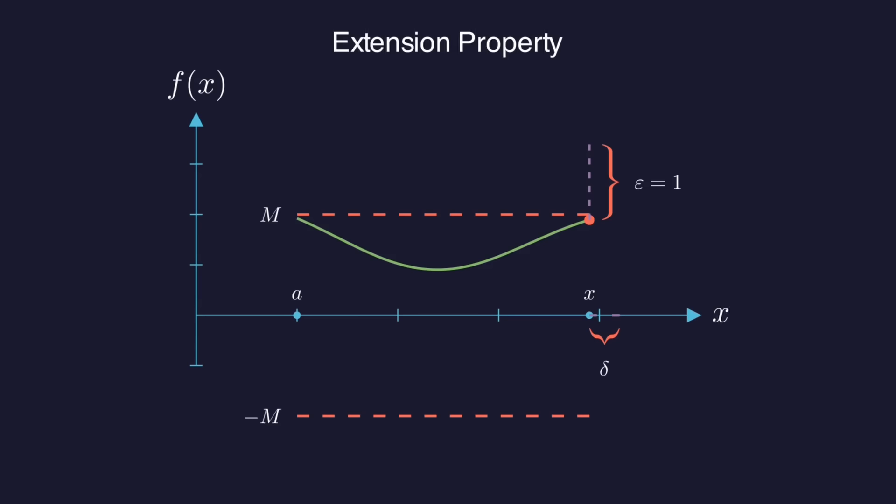And we can find some interval around X so that F doesn't get more than 1 unit away from whatever F of X is. So let's see where we stand. From A to X, F is bounded in magnitude by big M. And when we move from X to any point in that tiny interval, F doesn't increase or decrease by more than 1.